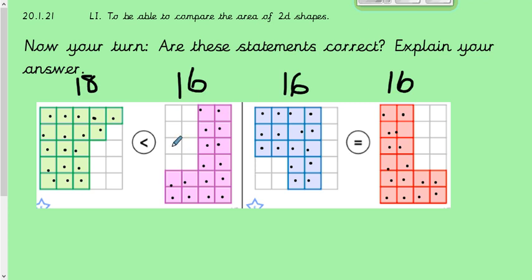So hopefully you managed to work out the answer for that one. So with this green shape, there are 18 squares, which means that the area was 18. And with the purple one, there are 16 squares. Therefore, the area is 16.